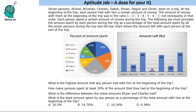Hello everyone, welcome to Aptitude Jab. This is a set based on a pie chart and a bar graph. There are seven persons — A, B, C, D, E, F, G — who went on a trip. In the beginning of the trip, each person had a certain amount of money, and the amounts were in the ratio 1:2:3:4:5:6:7, not necessarily in that order.